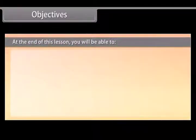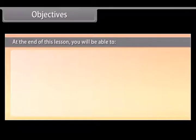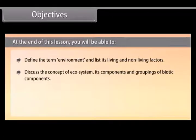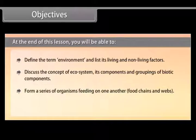Objectives. At the end of this lesson, you will be able to define the term environment and list its living and non-living factors. Discuss the concept of ecosystem, its components and groupings of biotic components. Form a series of organisms feeding on one another, food chains and webs.